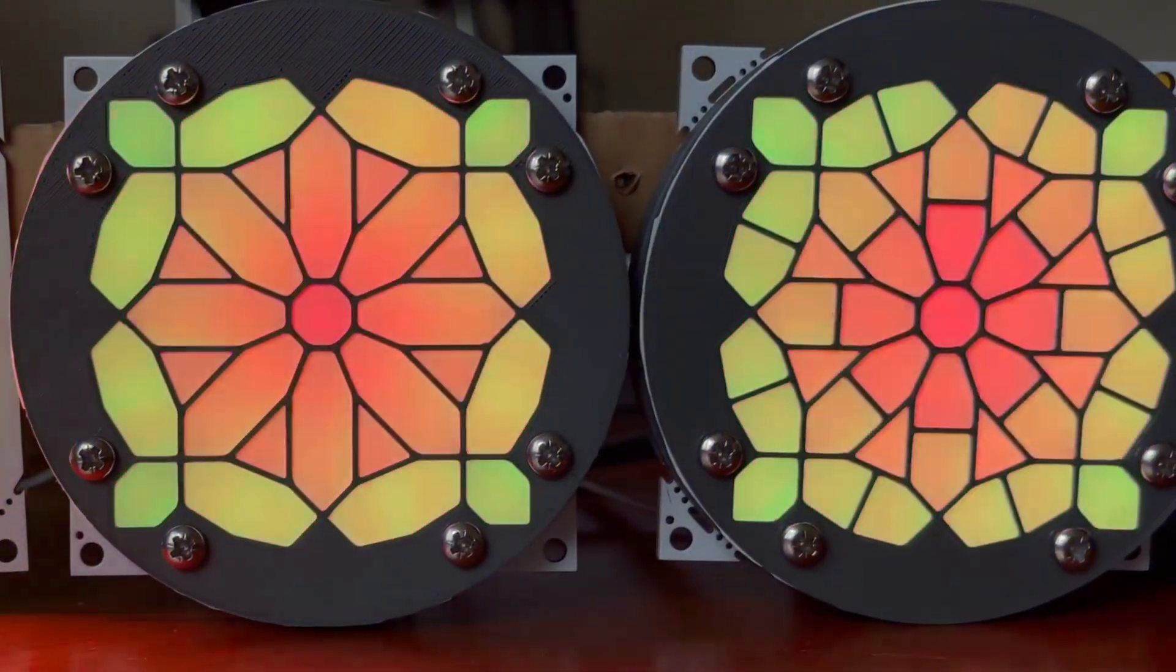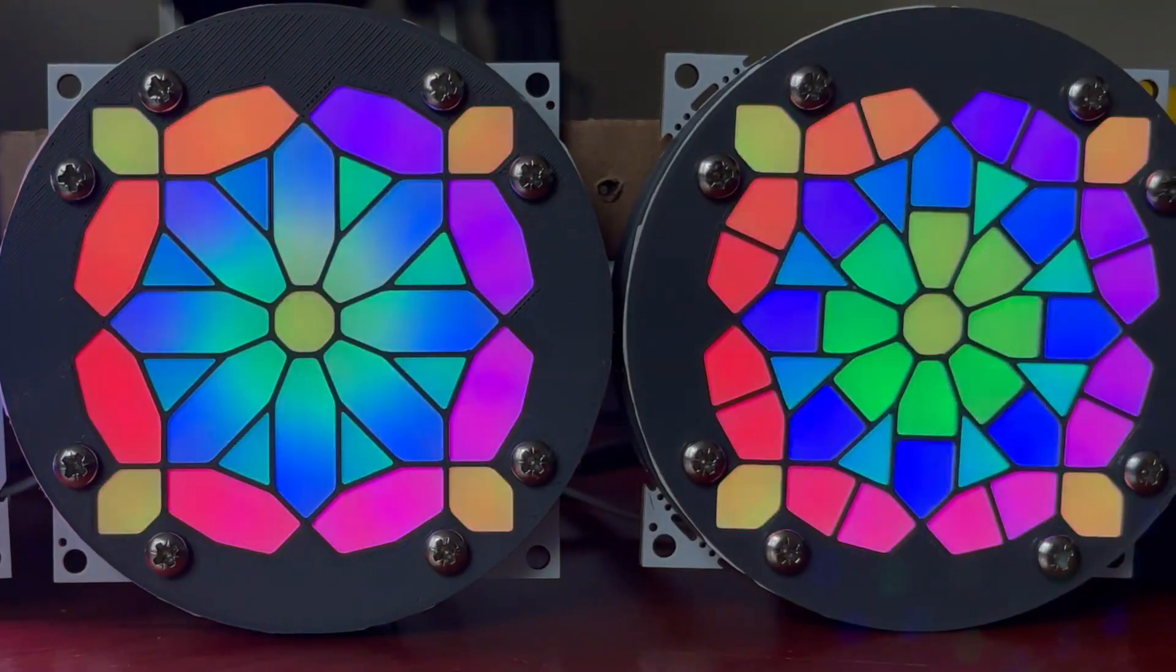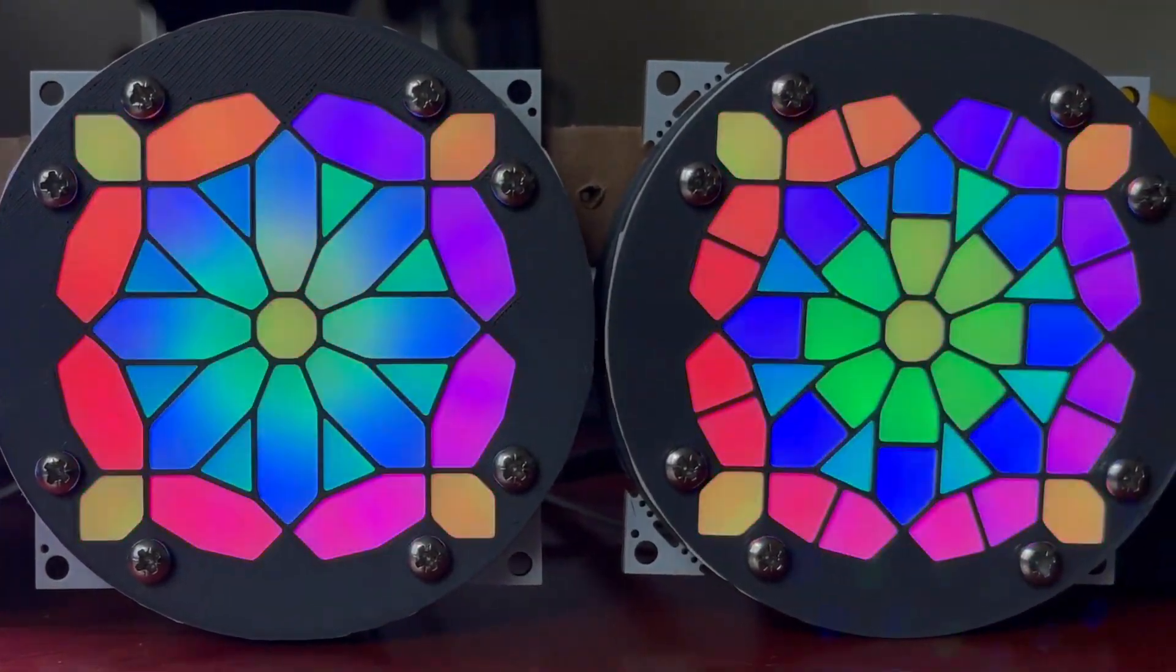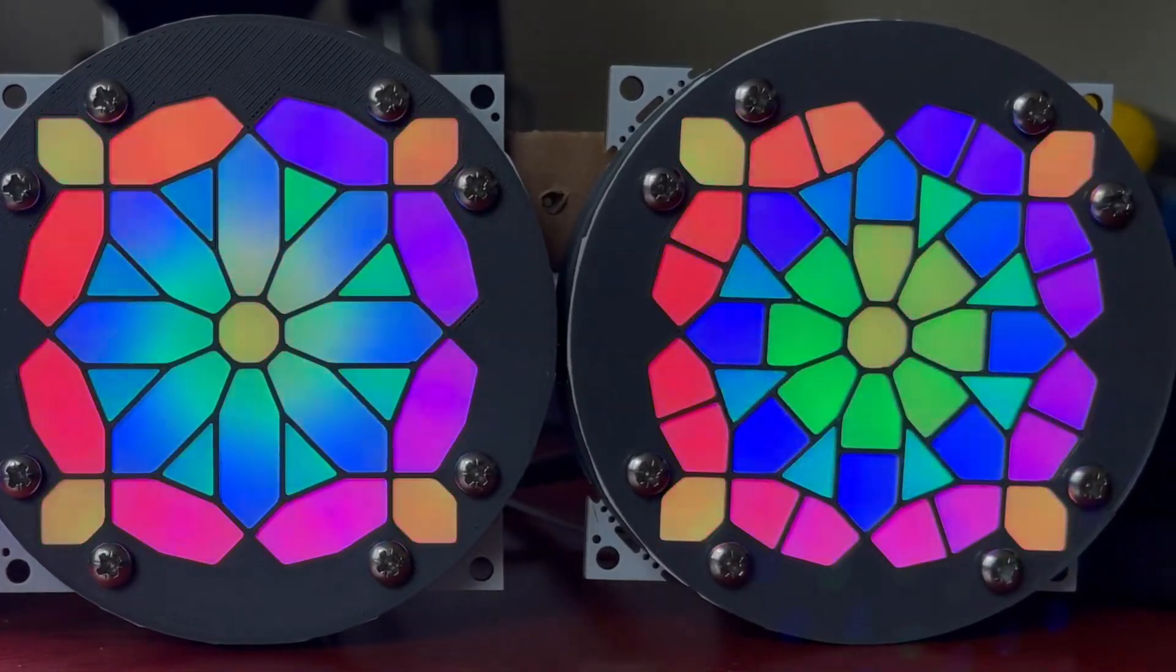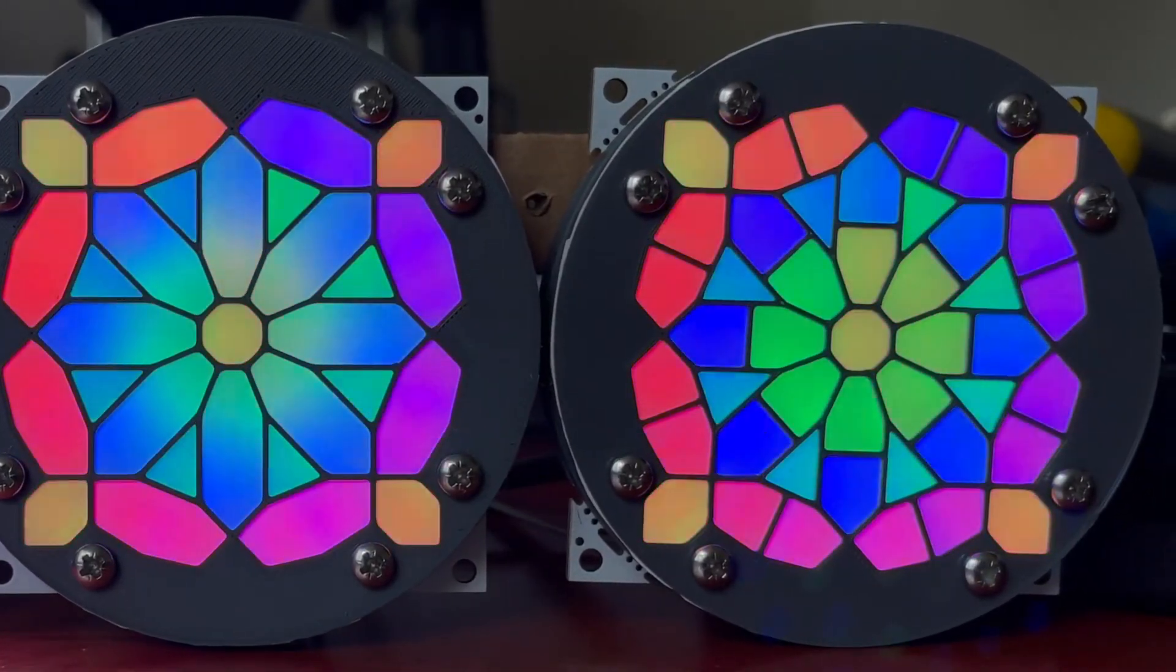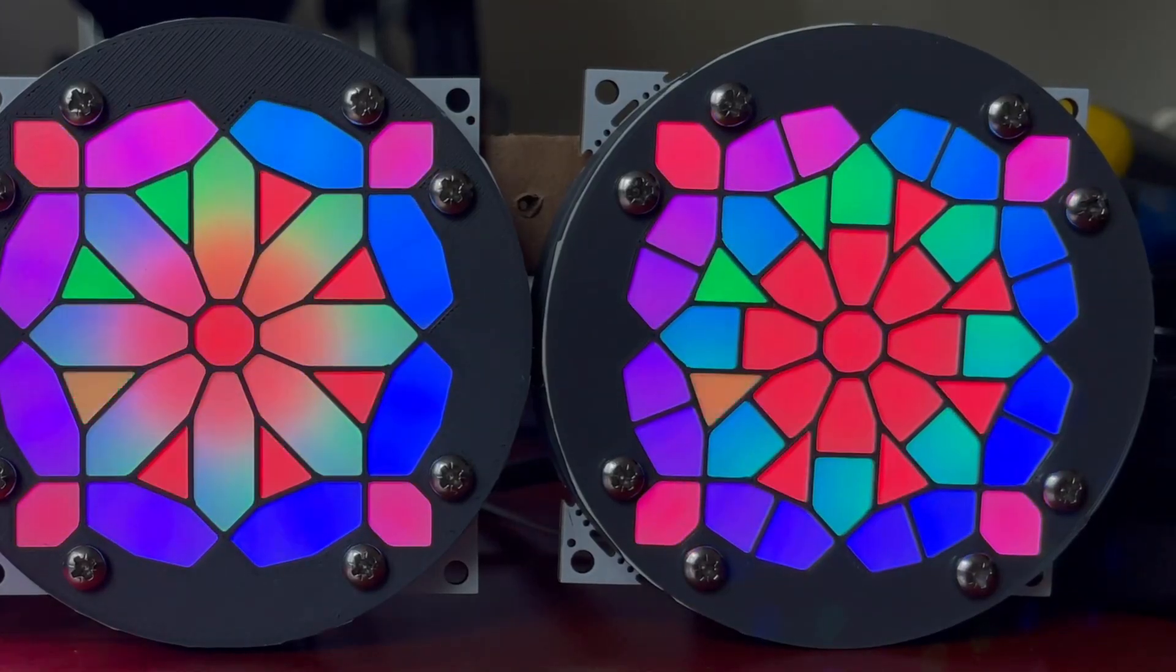Some of the segments in the 29 segment shell have two LEDs in them, which allows for a crude color gradient to be implemented in those segments. By comparison, the 45 segment shell only has one LED per segment, and the result looks more like a stained glass window.